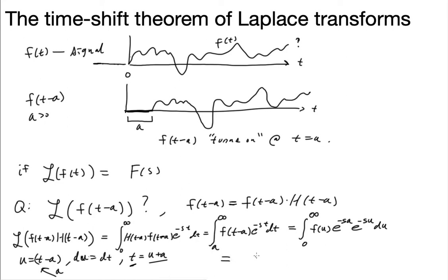And this thing right there, we can see that's actually just capital F of s, the Laplace transform. So the identity is e to the negative s times a times F of s.